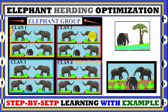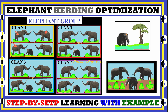The elephant group is composed of several clans — for example, four clans. In each clan we have female elephants and their calves, and in each clan there is an older female elephant as the clan leader. This behavior is modeled as the clan updating operator. The second behavior is based on male elephants, as in the clan we have only females and their calves, with no male elephant.